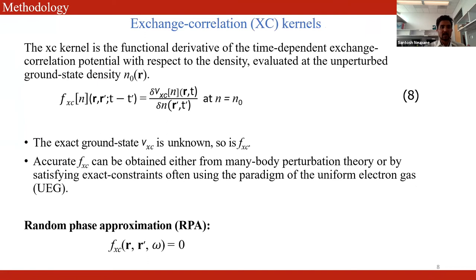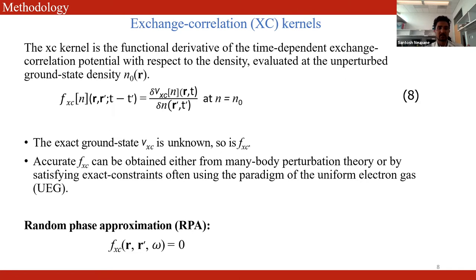The exchange-correlation kernel is defined as the functional derivative of the exchange-correlation potential with respect to the density, evaluated at the unperturbed ground-state density. The exact form of the ground-state exchange-correlation potential is unknown, so the exchange-correlation kernel is also unknown. However, accurate exchange-correlation kernels can be obtained from many-body perturbation theory or by satisfying exact constraints using the paradigm of the uniform electron gas. In the random phase approximation, the exchange-correlation kernel is set to zero.